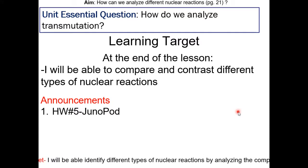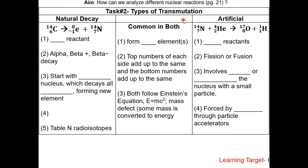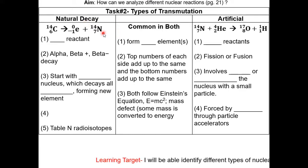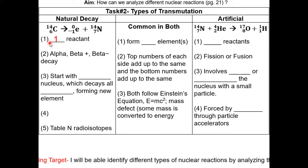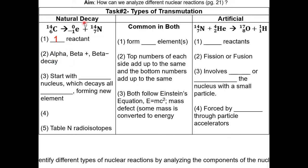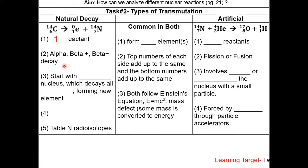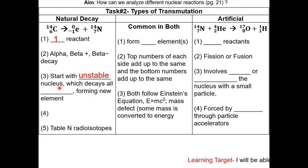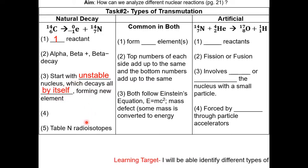There are two types of transmutation: natural decay and artificial transmutation. Let's start with natural decay. Here is an example of a natural decay nuclear reaction — notice there is only one reactant. Alpha, beta plus, and beta minus decay are considered natural decay transmutation. In natural decay, you start off with an unstable nucleus, which is radioactive, and it decays all by itself, forming a new element. This is spontaneous.